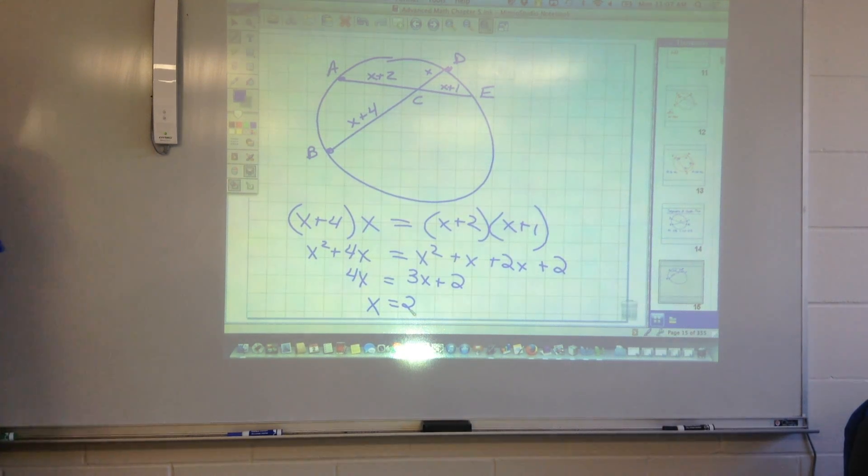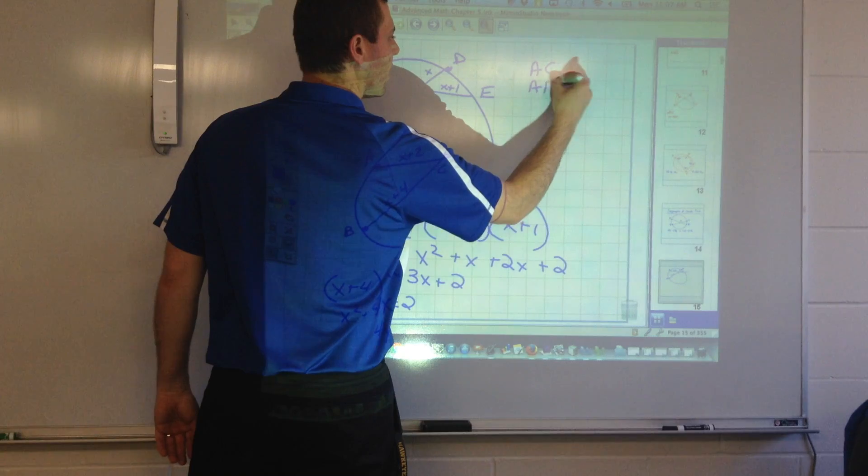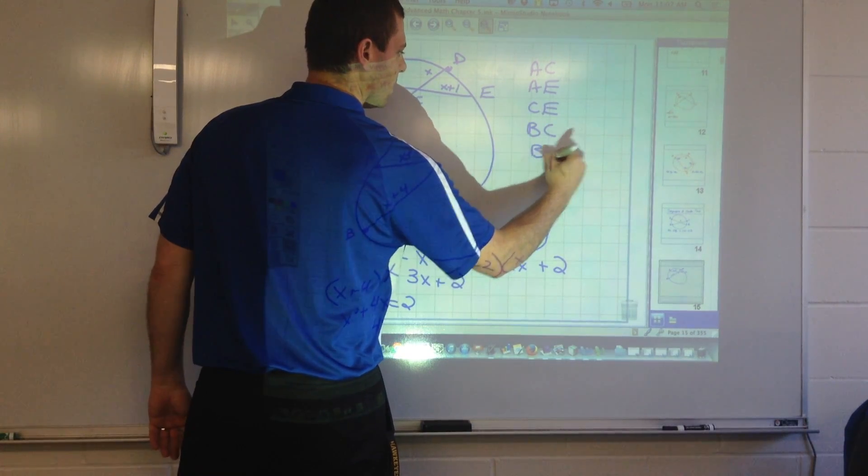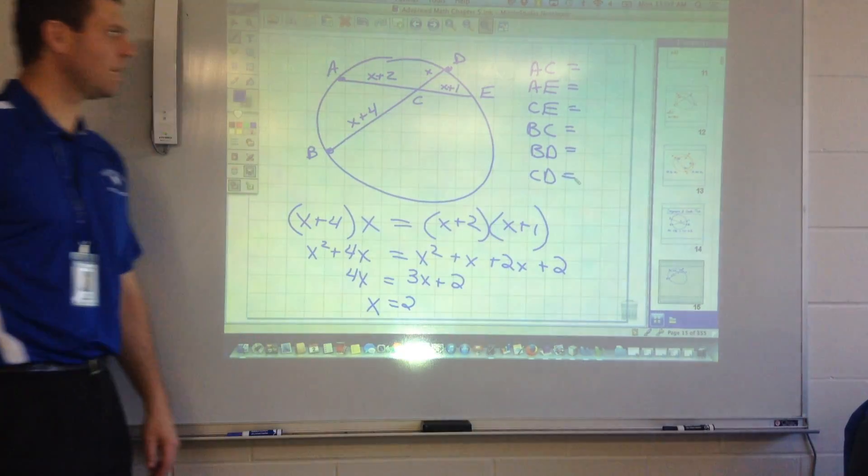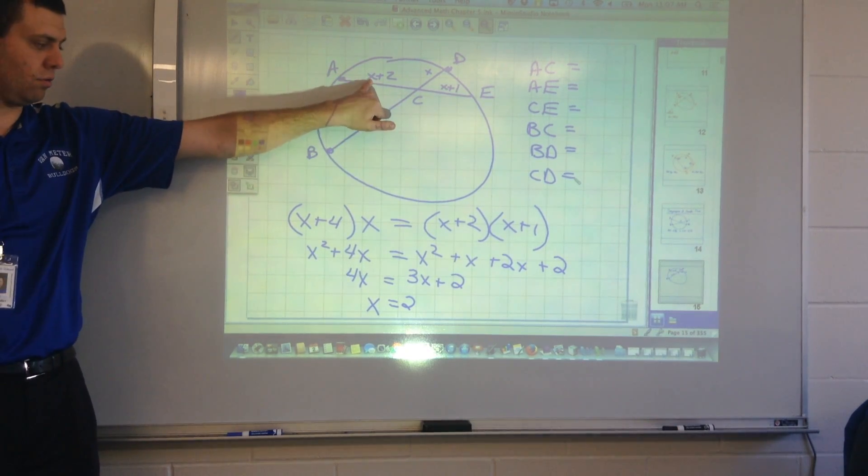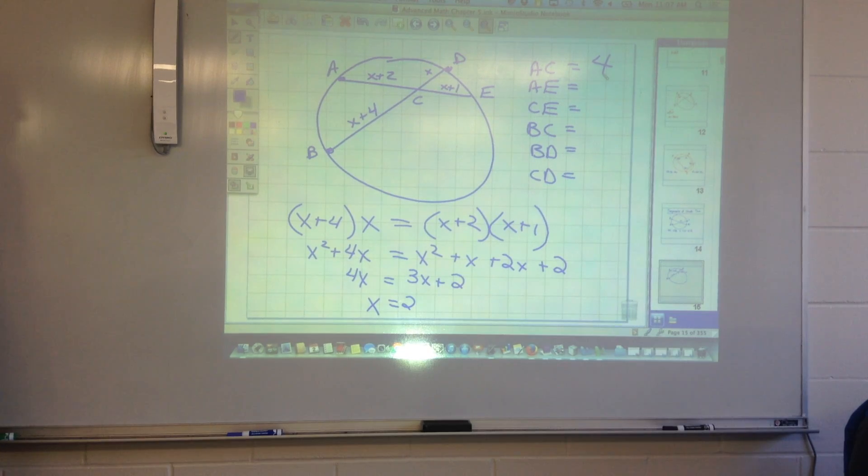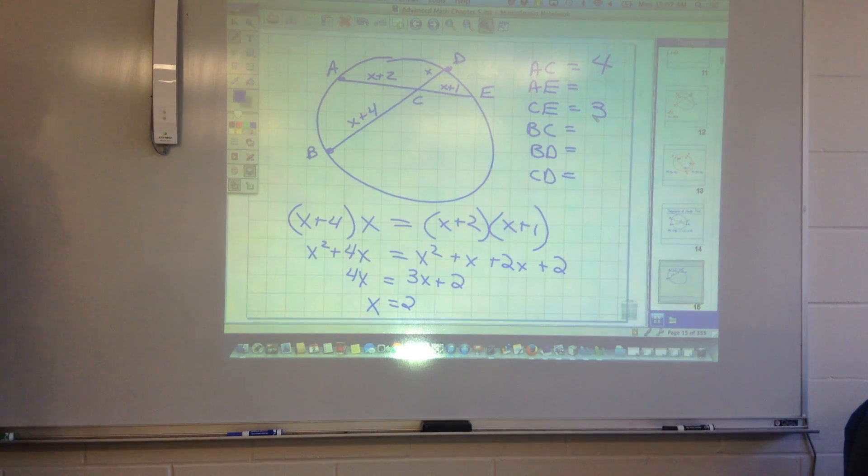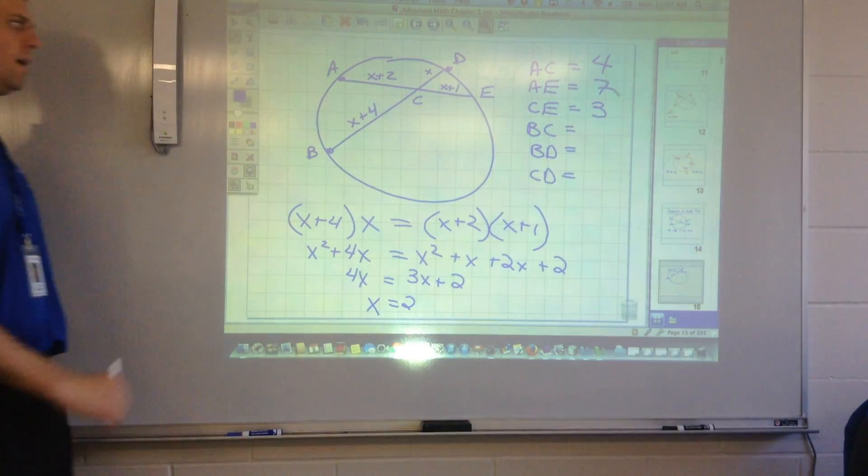Now could you write down the lengths of all the segments? Yep. AC, AE, CE, BC, BD, CD. I could do all of them. How long is AC? A to C. 2. Remember, X equals 2 plus 2, so that'd be 4, right? How about CE? 3. So what's AE then? 7, right? Because if that's 4 and that's 3, then the whole thing obviously would have to be 7.